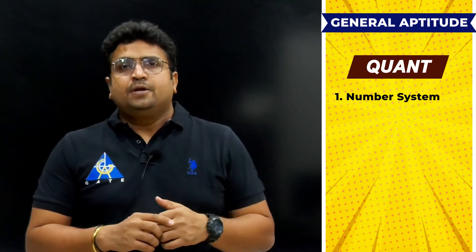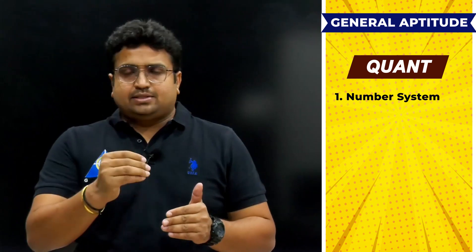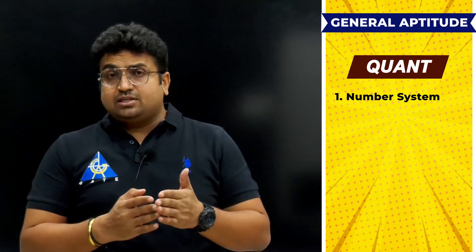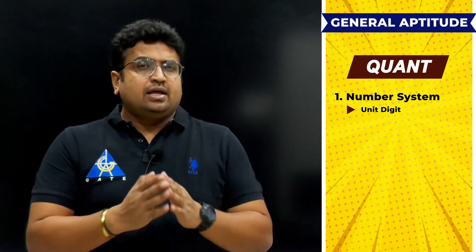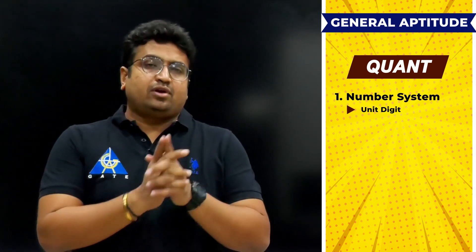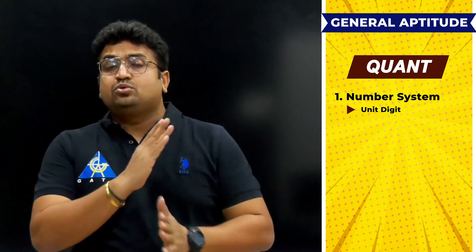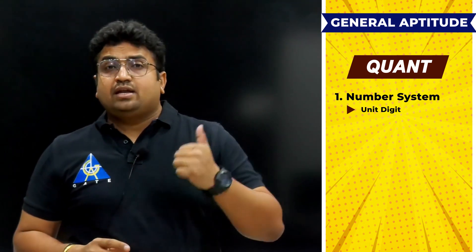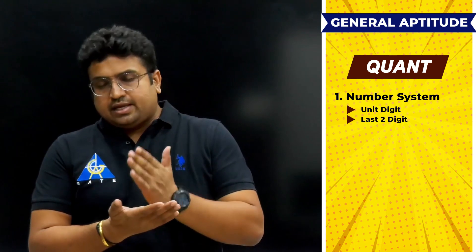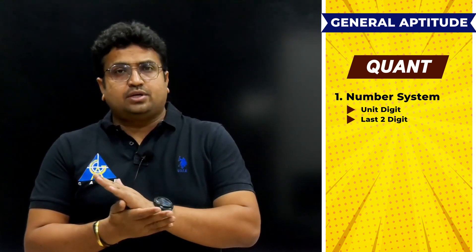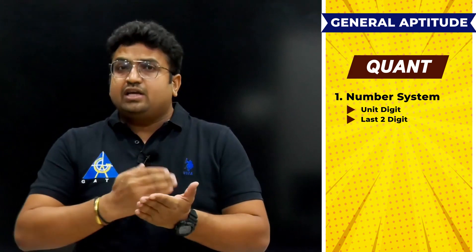Let's come back to the number system. Every single chapter I've divided into multiple parts. For example, in number system I've covered unit digit value — you've seen in past GATE exams they've asked unit digit value questions in two different years. I've also taken one more topic: last two digits. Although in GATE they haven't asked about last two digits yet, this kind of question will definitely come in the near future.